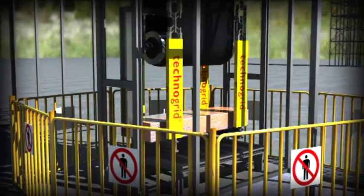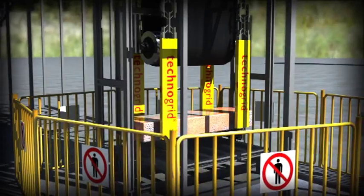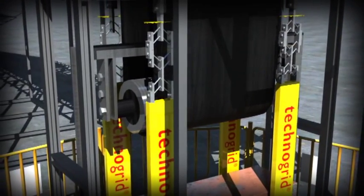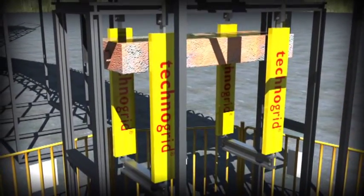The counterweight remains on the catch frame, ready for reinstallation on the repaired belt. After a full impact, the Technogrids are replaced, ready for the next belt failure.